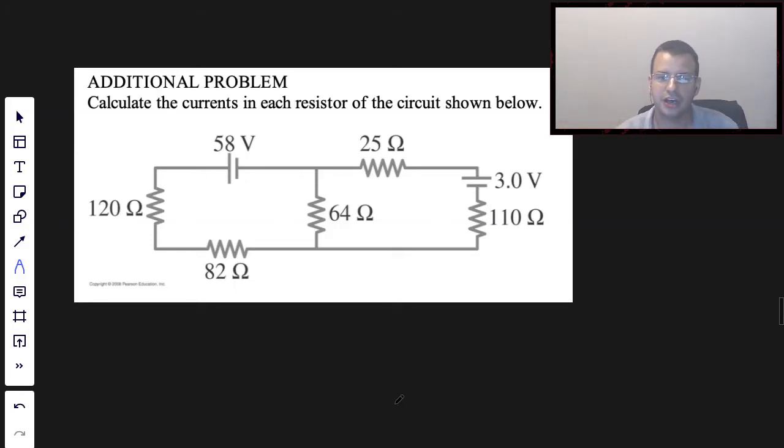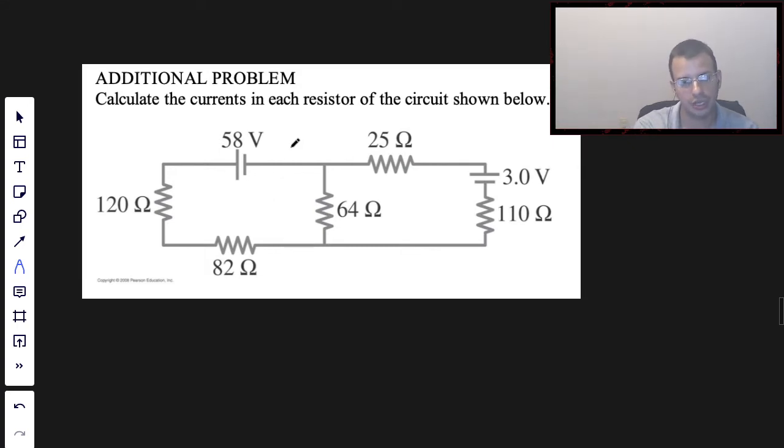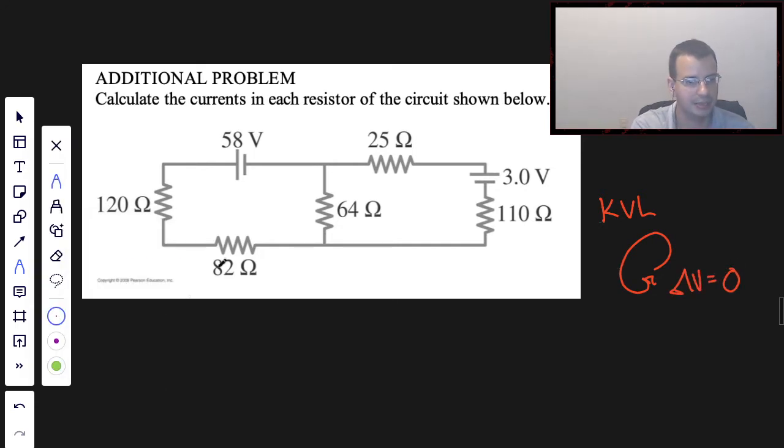Calculate the currents in each resistor of the circuit shown below. To do this we have two batteries in two different branches, so we're probably not going to be able to reduce this down to one battery and one resistor. So we're going to use Kirchhoff's voltage law. Kirchhoff's voltage law means that whenever you go in a loop, the delta voltage between the two points is going to be zero because they are in fact the same point.